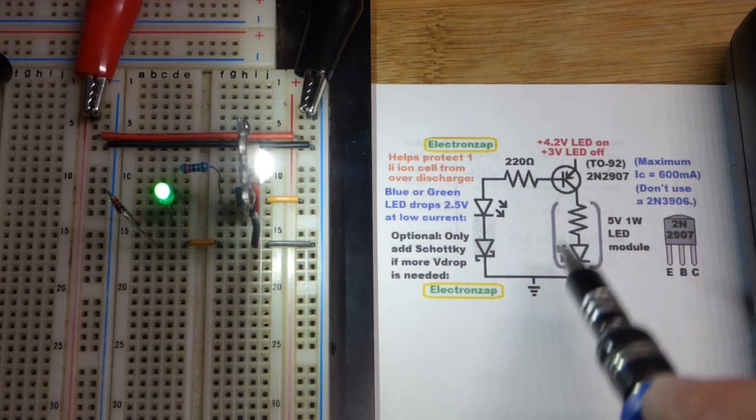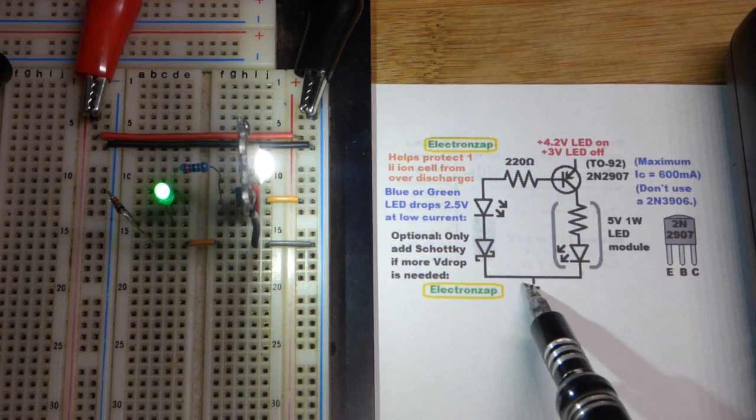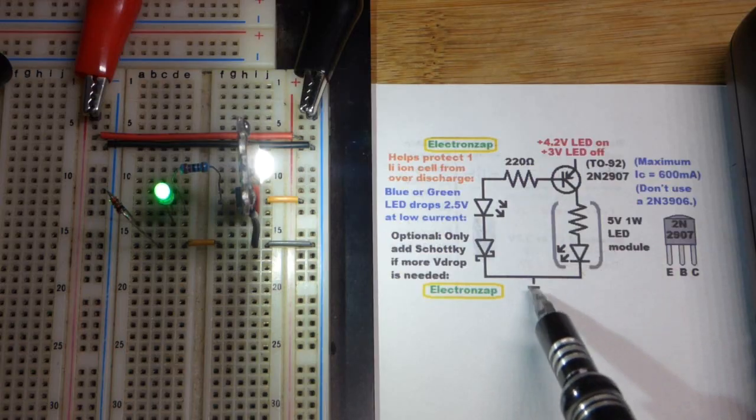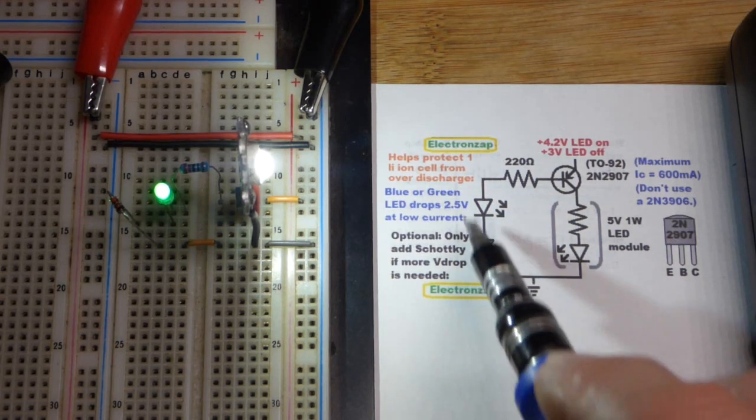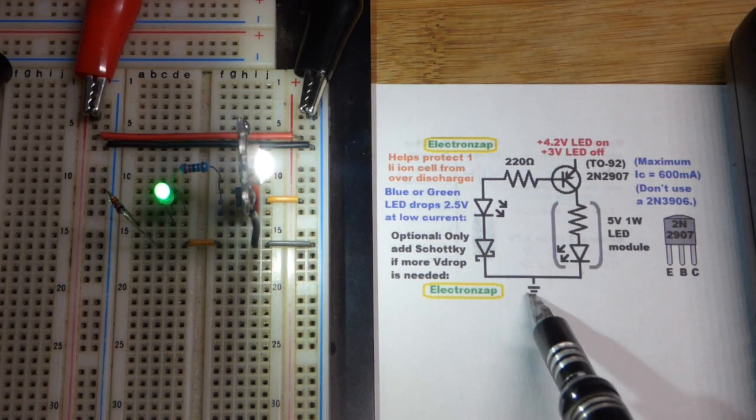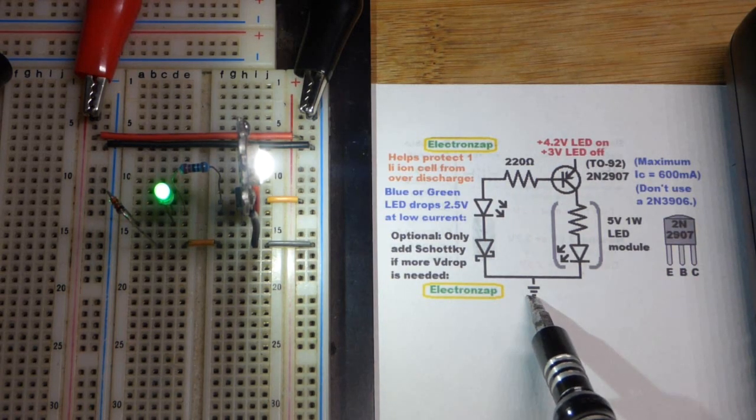You need a little bit of emitter to base current to flow in order for a lot more emitter to collector current to flow. It's many times, maybe 100 times, maybe 200 times. 200 times as much current flowing that way versus what is flowing that way. Whatever you got going through here, you're going to get a multiple of some number.